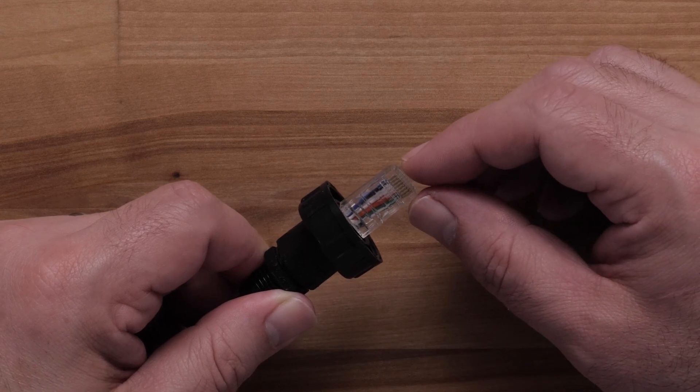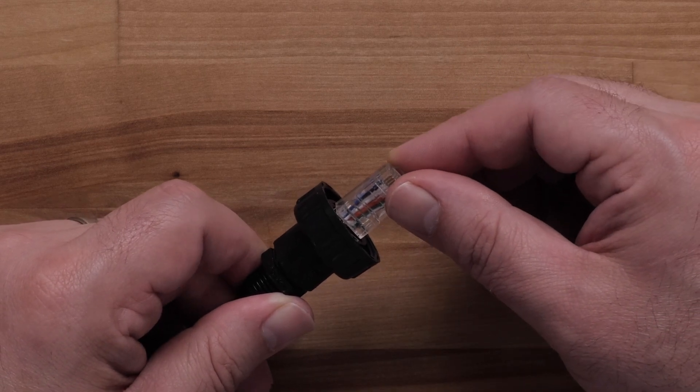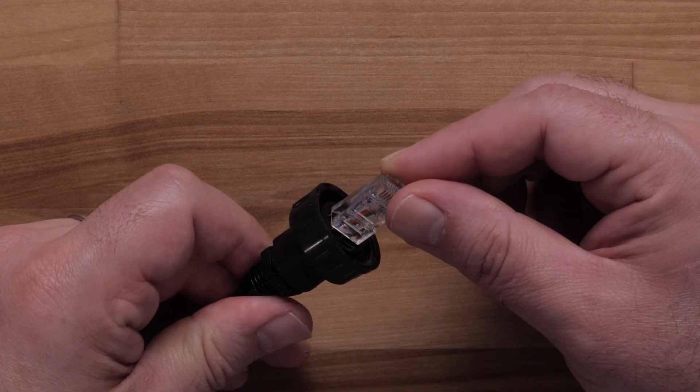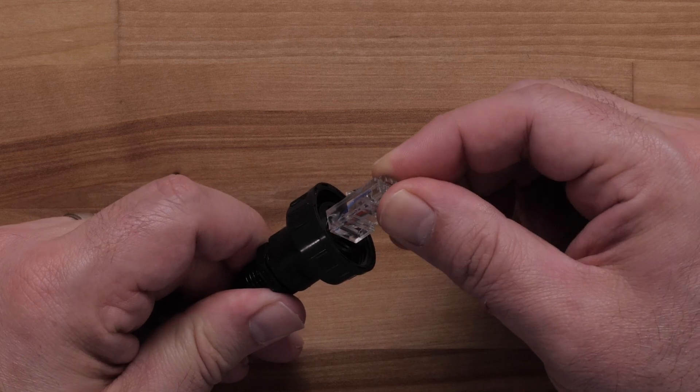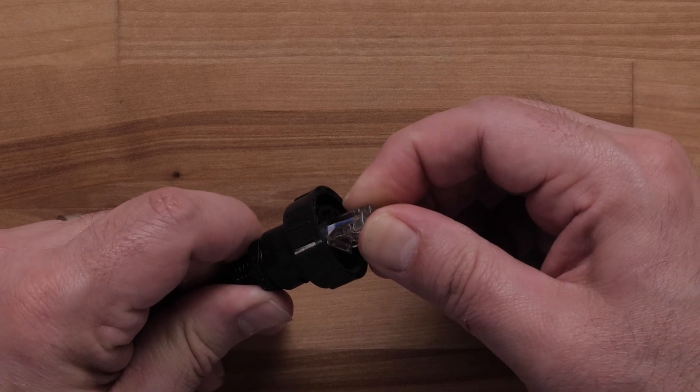Align the release tab on the connector with the corresponding notch in the cable connection housing. Push the cable through the connection housing until the connector is securely seated.